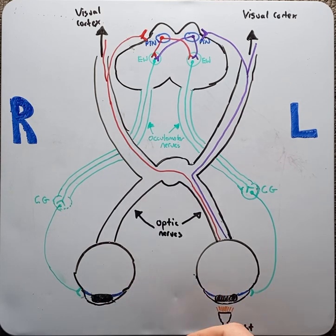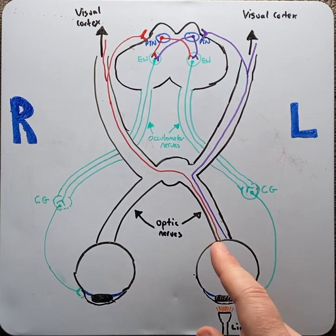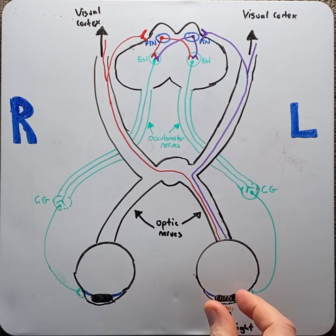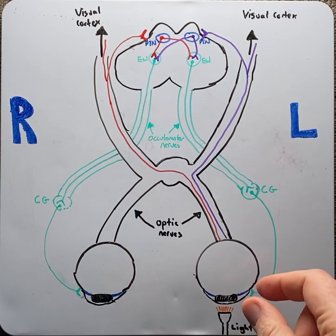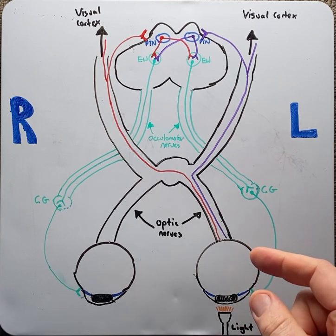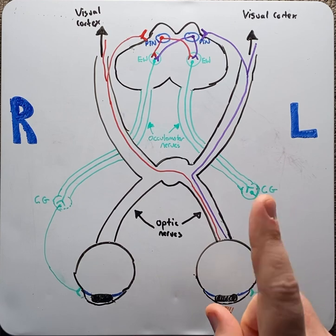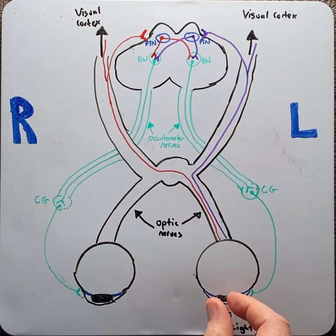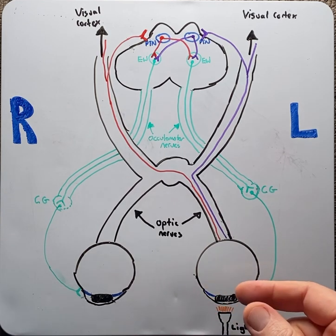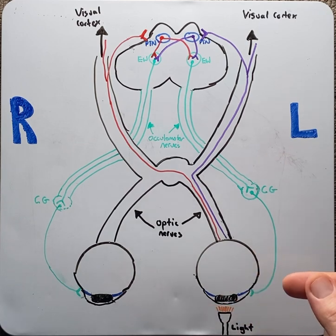The size of your pupils depends on the balance between the parasympathetic nervous system and the sympathetic nervous system. Parasympathetic activation leads to pupil constriction, known as meiosis, through the contraction of the sphincter pupillar muscle or simply the iris sphincter. While sympathetic innervation leads to pupil dilation, known as mydriasis, through the iris dilator muscle.